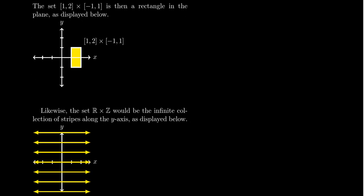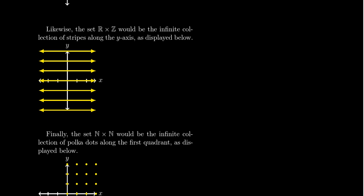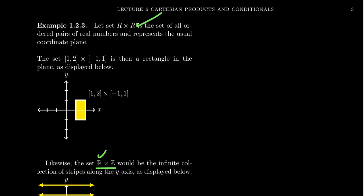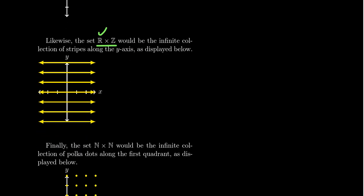Let's look at cases where the measure of the sets is infinite. Consider R × Z — the real numbers cross the integers. For the x-coordinate we take all real numbers, but for the y-coordinate we only take integer values: 0, 1, 2, 3, -1, -2, -3, and so on. The Cartesian product in that situation looks like a ladder of lines — horizontal lines placed at integer markers along the y-axis. That is the visualization of this Cartesian product.